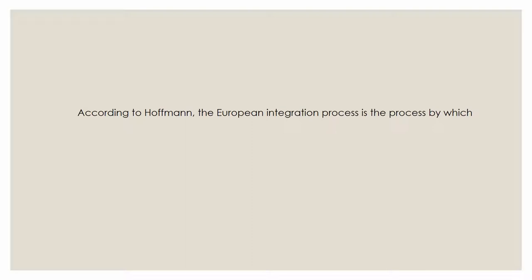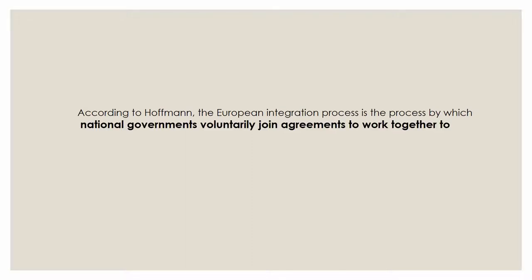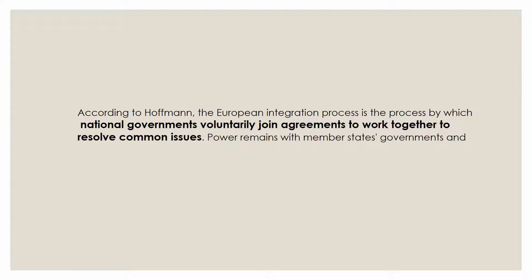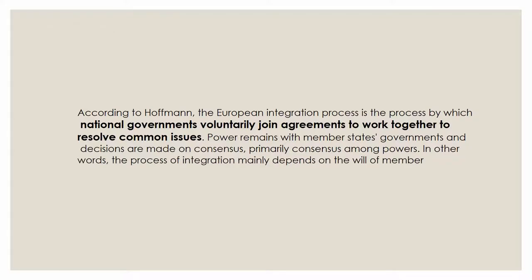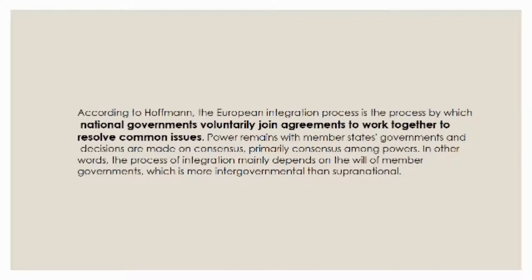According to Hoffman, the European integration process is the process by which national governments voluntarily join agreements to work together to resolve common issues. Power remains with member states' governments, and decisions are made by consensus — primarily consensus among the major powers. In other words, the process of integration mainly depends on the will of member states. This leads us to a typical case of disagreeable decision-making: the empty chair crisis in 1965.